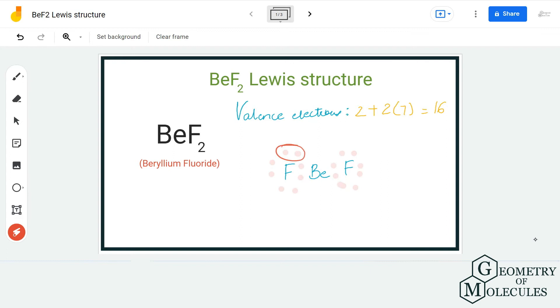...by shifting electron pairs from fluorine atoms, you'll get weird formal charges where beryllium has a -2 charge and fluorine atoms have +1 charges. This is incorrect because beryllium is less electronegative than fluorine and cannot have a negative charge.